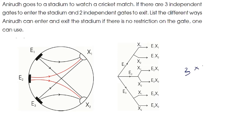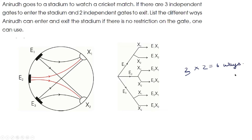There are three entrances and two exits. So by the Fundamental Principle of Multiplication, the total number of ways is 3 into 2, which is 6. If we count all combinations, we get 6 ways. This is how we can use the Fundamental Principle of Counting to get the values.